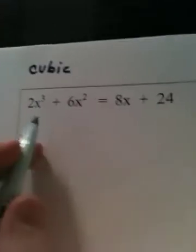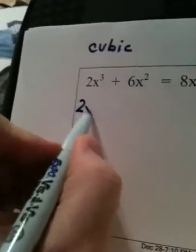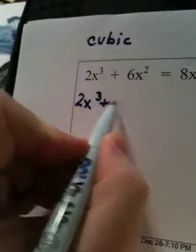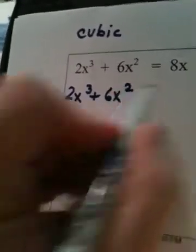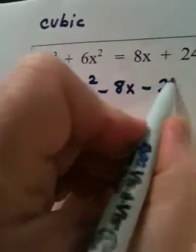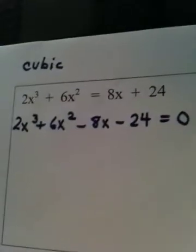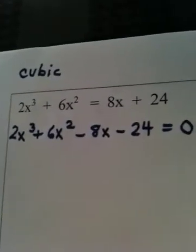Alright, when you're solving a cubic equation, the first thing you do is put it in standard form. So, 2x cubed plus 6x squared minus 8x, we're changing signs, minus 24 is equal to 0. That's called standard form.